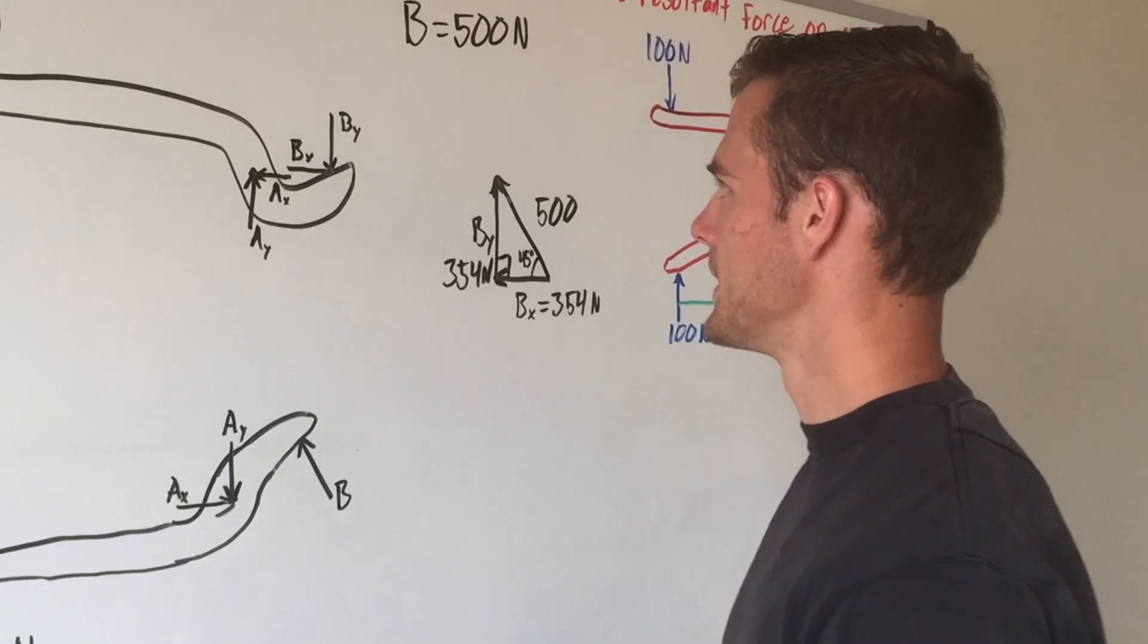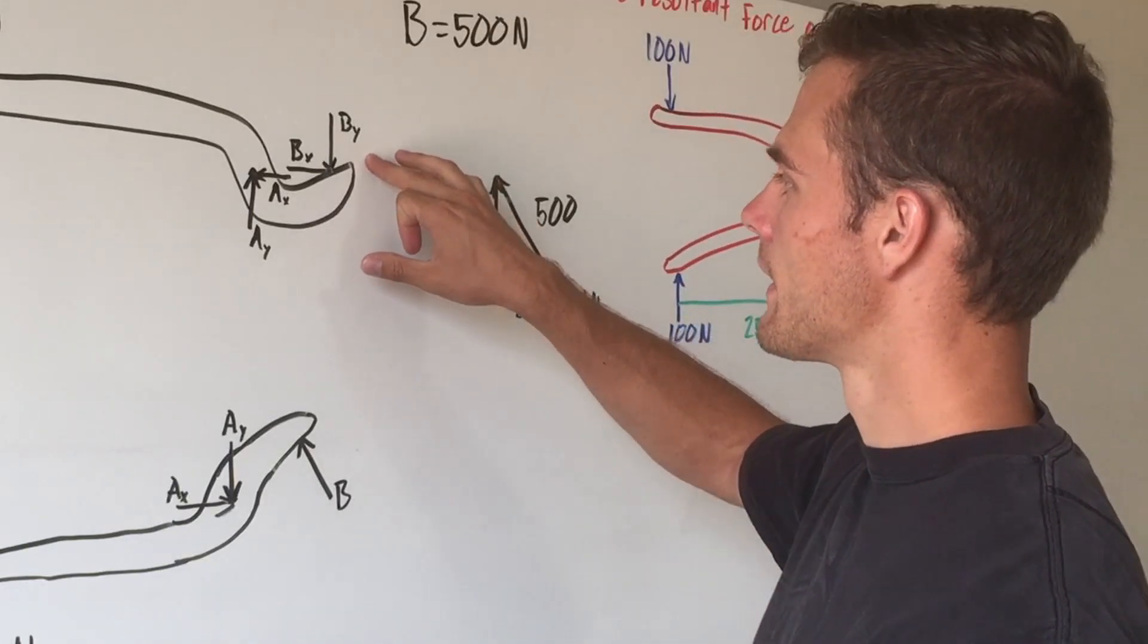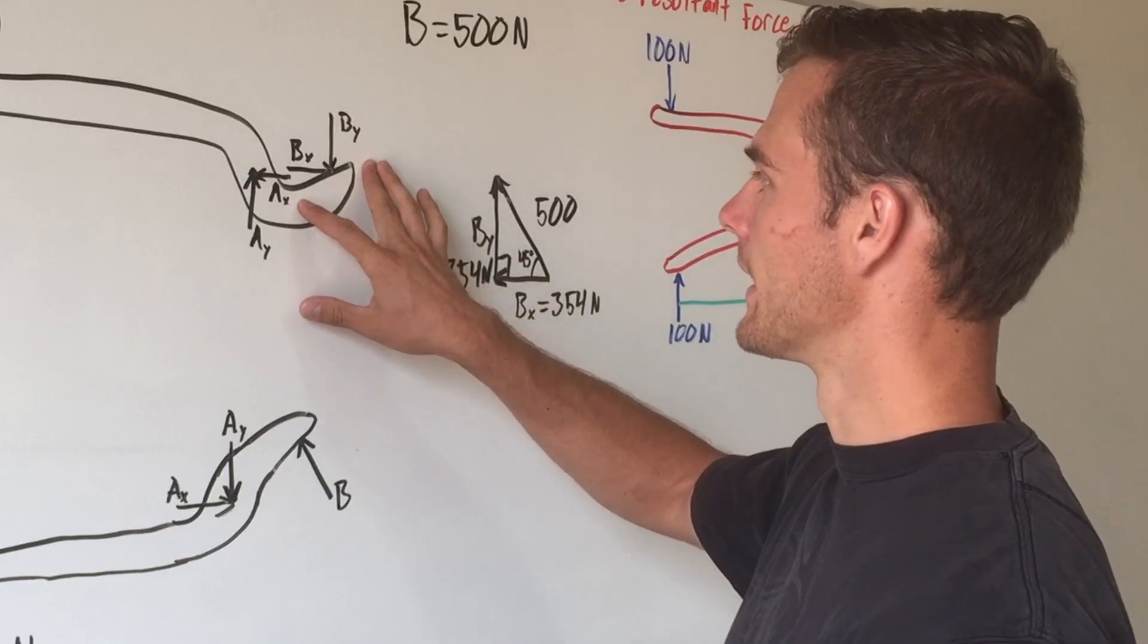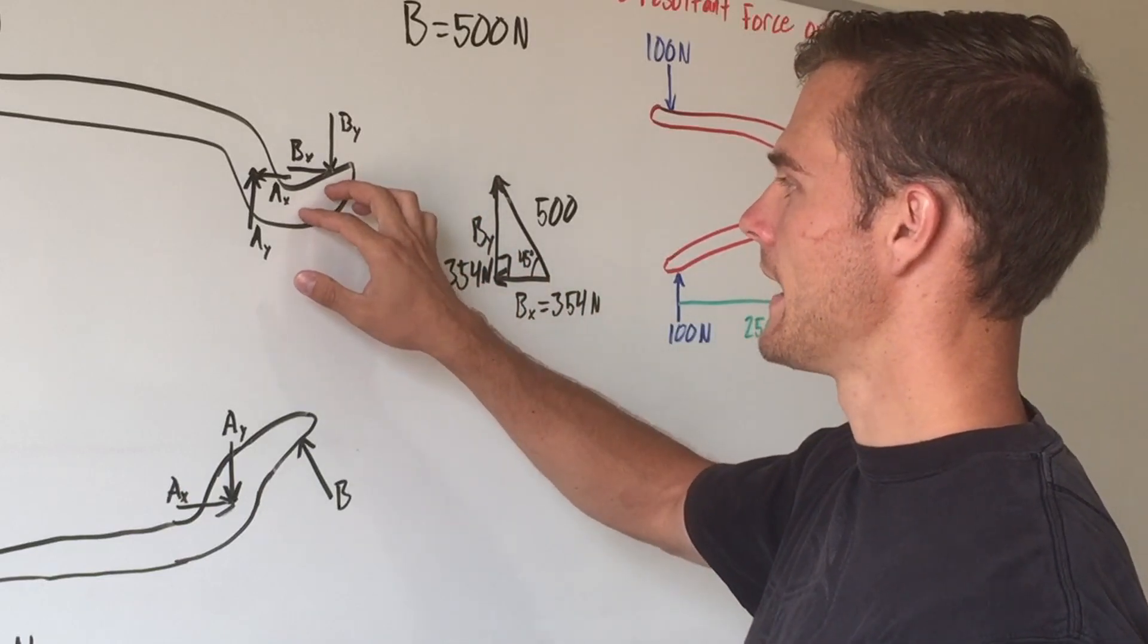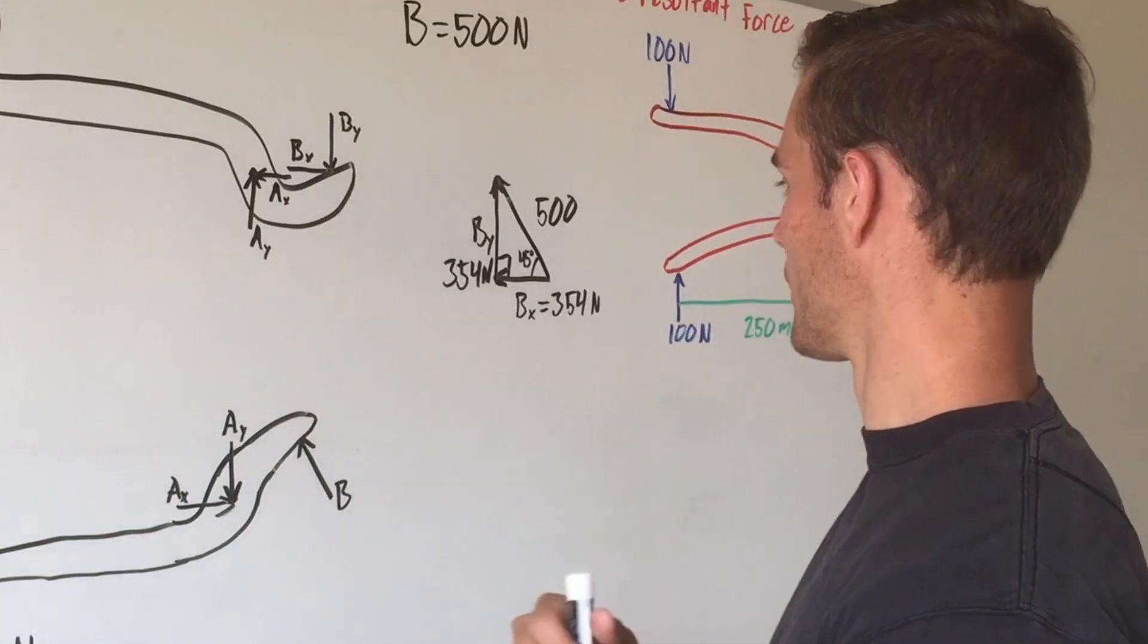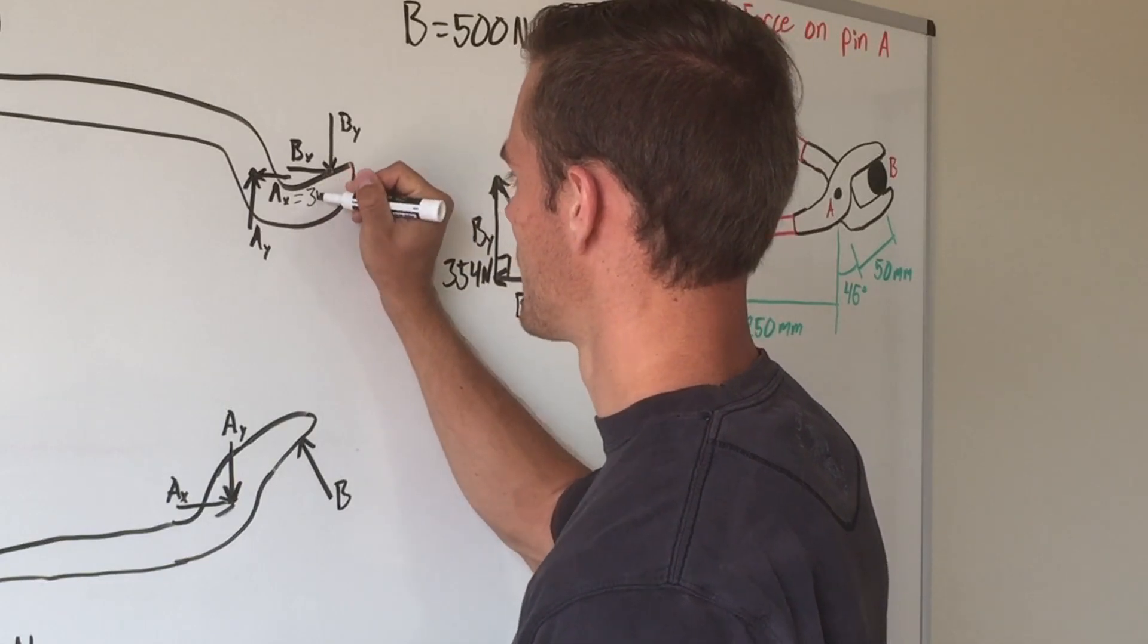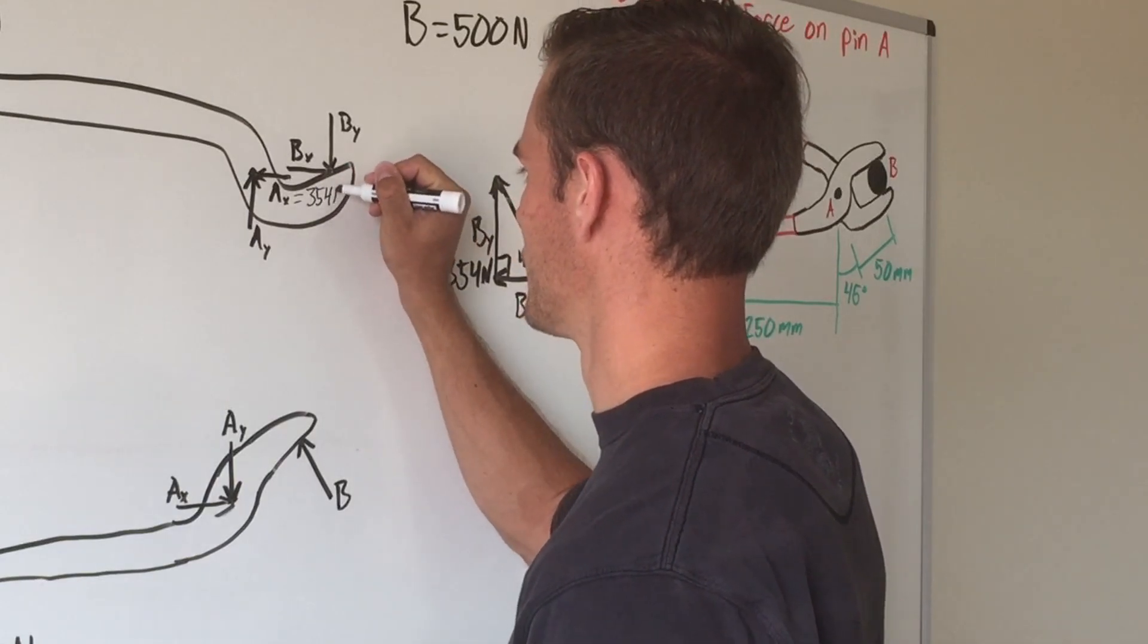Well we found B sub x and B sub y, and on here that means that A sub x—because B sub x and A sub x are the only forces in the x direction—A sub x also has to equal 354 newtons. So we'll write that over here that it is 354 newtons of force.